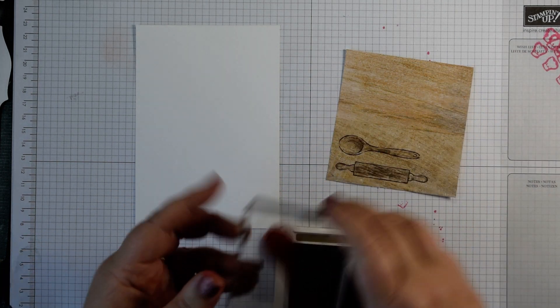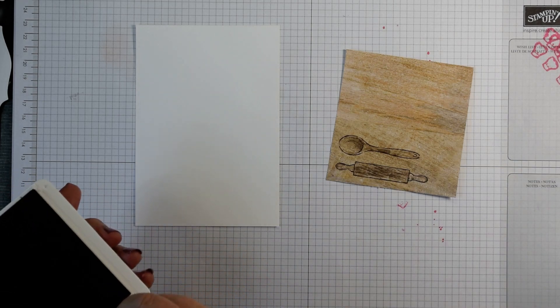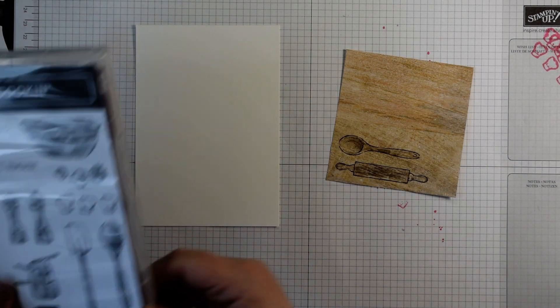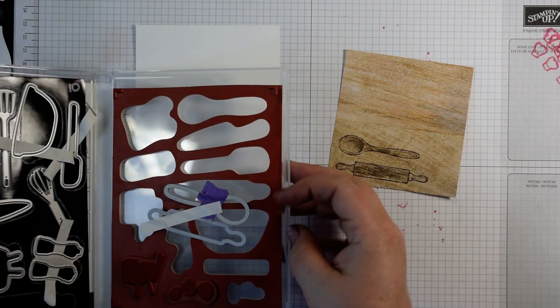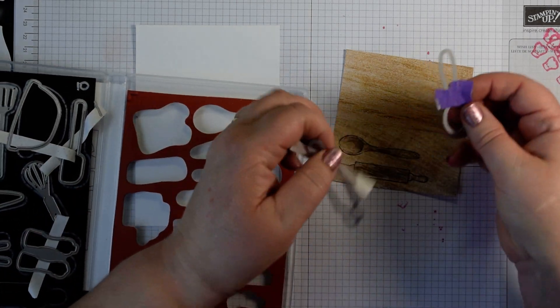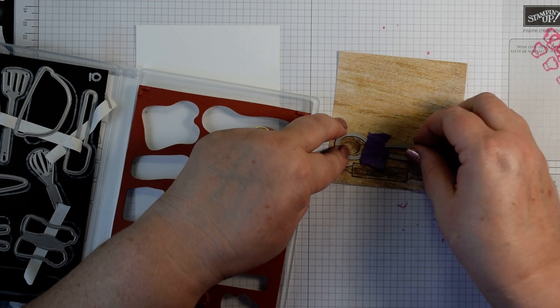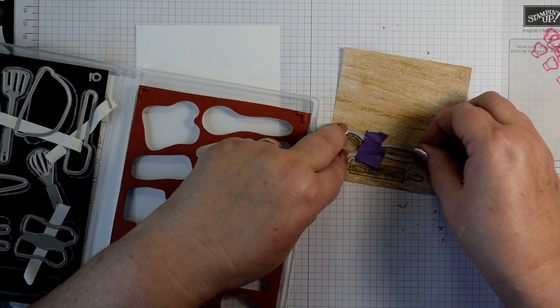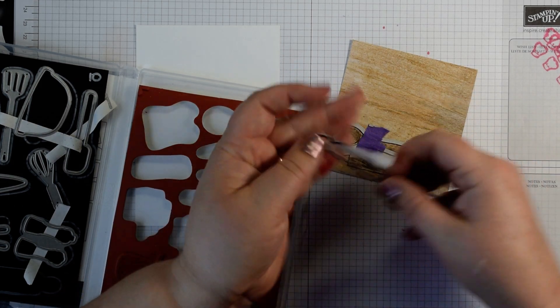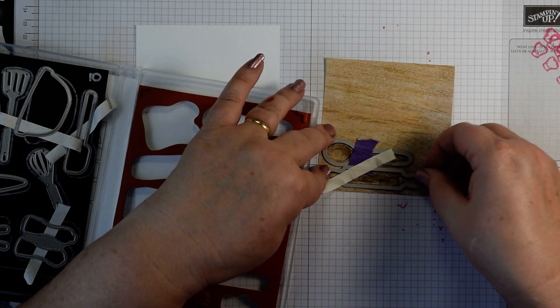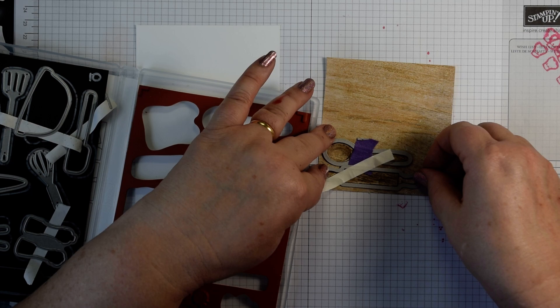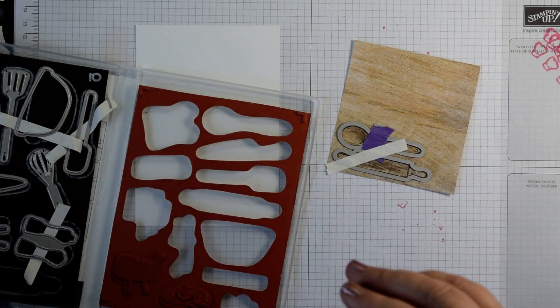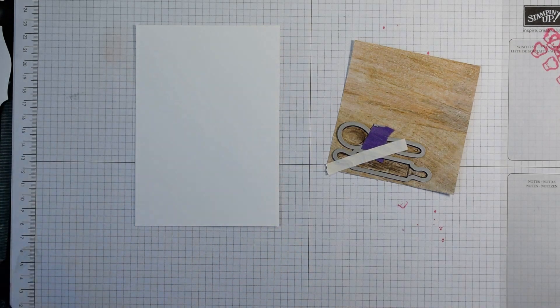Now you could fussy cut these out if you prefer if you haven't got a die cutting machine, but it makes life a lot easier if you have. I've added a little bit of low tack tape to these dies just to hold them in place while I die cut. I haven't found there's an up or down on the rolling pin so just kind of pop that in there.